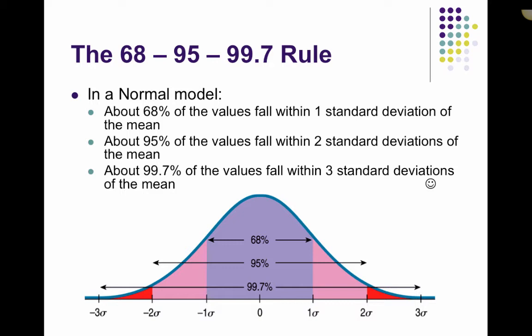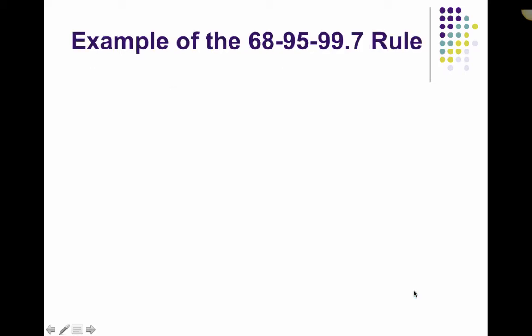So, this is shown like this. The normal model, again, is a bell-shaped curve. Your mean is right here in the middle, which we're just making zero right now. And then 68% of the data are within one standard deviation of the mean. 95% of the data are within two. And 99.7% are within three.